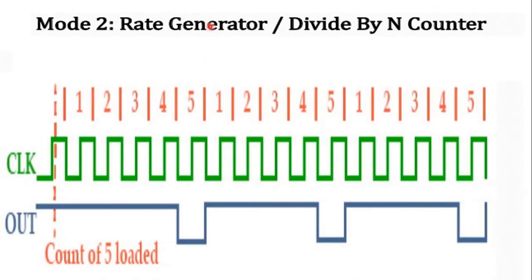In mode 2 (rate generator), the 8254 becomes a divide-by-N counter. The gate is held high and the output is normally high. When the count is loaded into the counter, the countdown begins. When the count reaches 1, the output goes low; the falling edge of the next clock pulse causes the output to go high again, and the original count is reloaded and the process repeats. If the counter is loaded with number N, the output pin goes low for one clock cycle in every N input clock pulses. The frequency of the output waveform equals the input clock frequency divided by N.